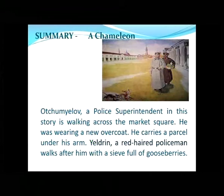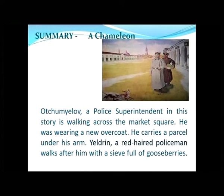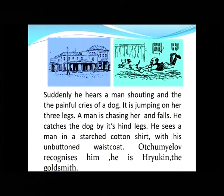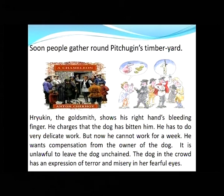Ochumailov, a police superintendent, is walking across the market square wearing a new overcoat and carrying a parcel under his arm. Yeldrin, a red-haired policeman, walks after him with a sieve full of gooseberries. Suddenly he hears a man shouting and the painful cries of a dog. The dog is jumping on three legs. A man chases her, falls, and catches the dog by its hind legs. Soon people gather around Pichugin's timber yard.